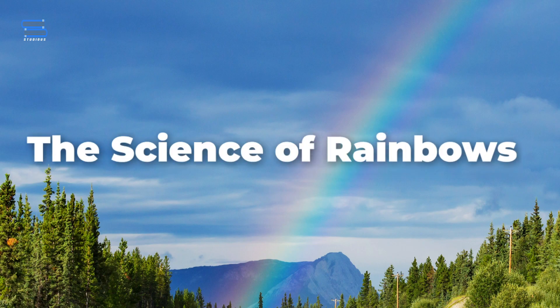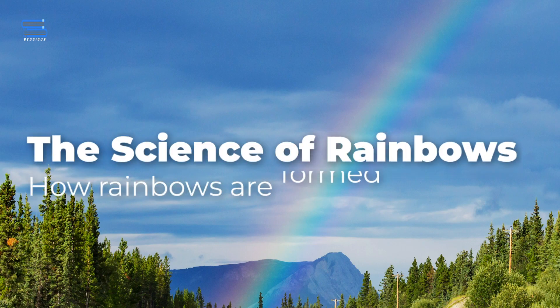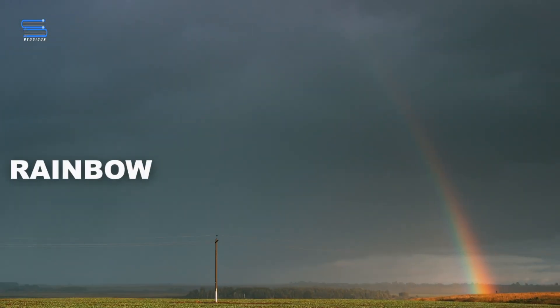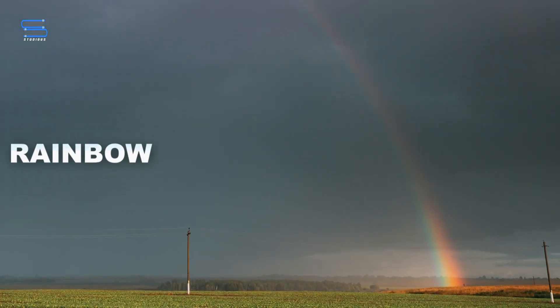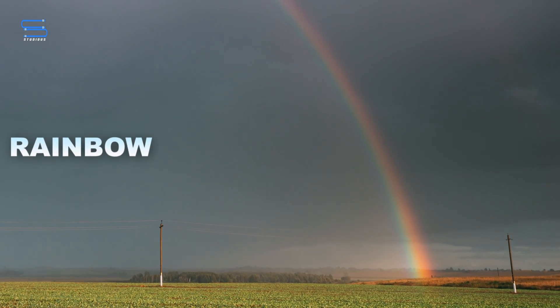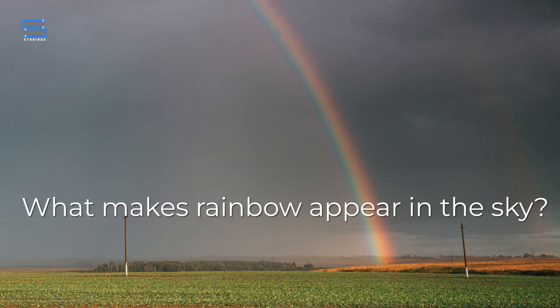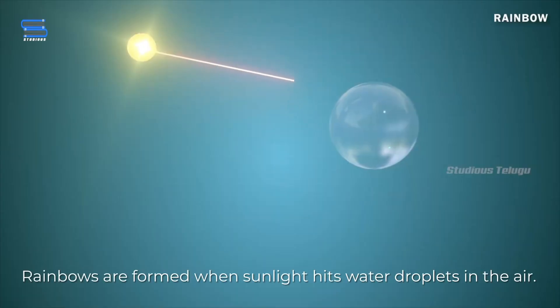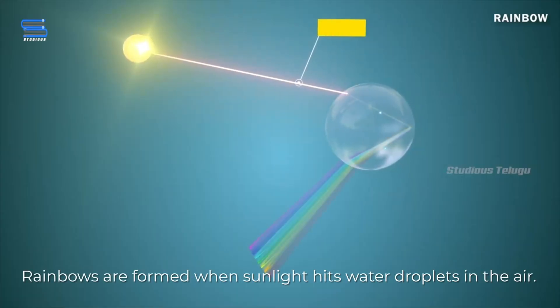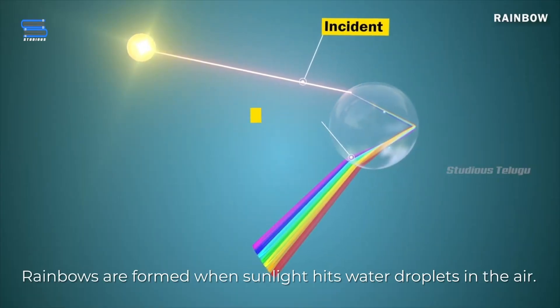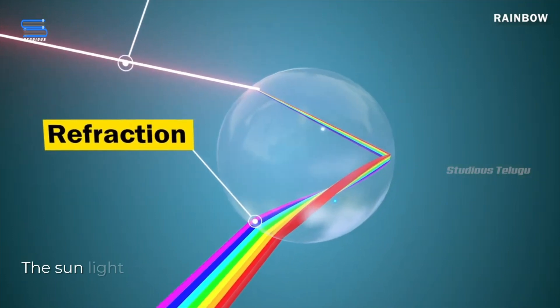The science of rainbows. Have you ever seen a rainbow? They're so beautiful, but what makes them appear? In this video, we'll explore the science of rainbows. Rainbows are formed when sunlight hits water droplets in the air.